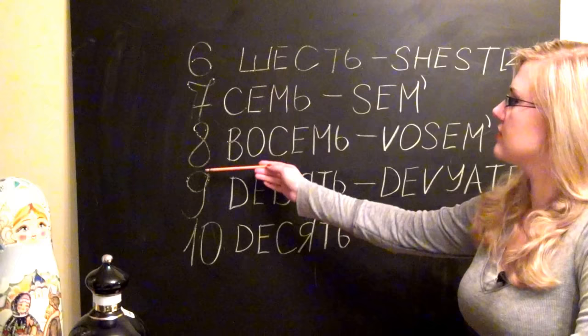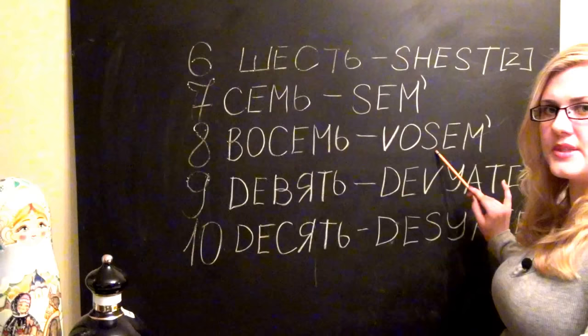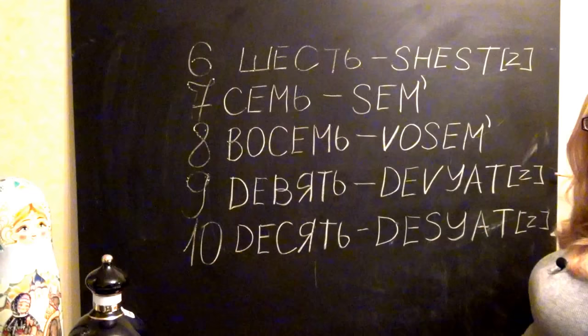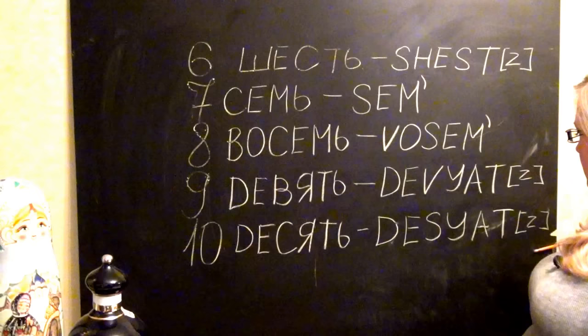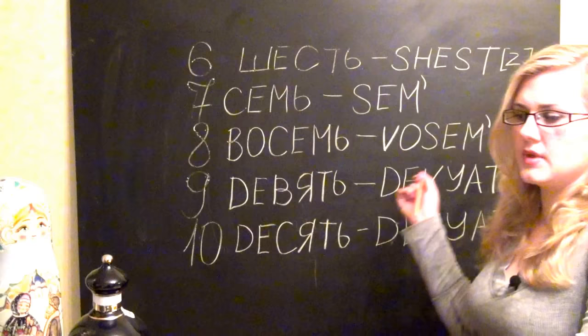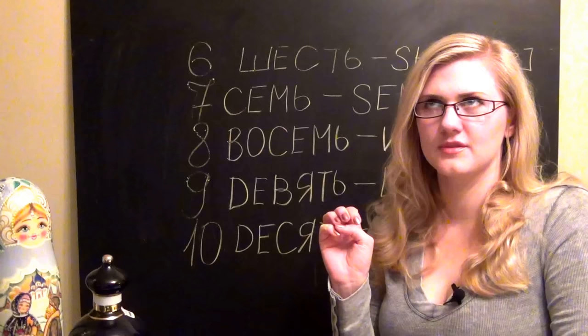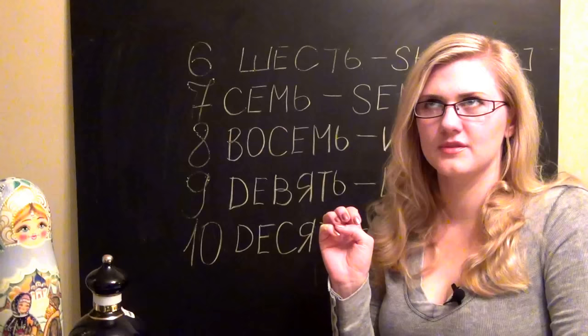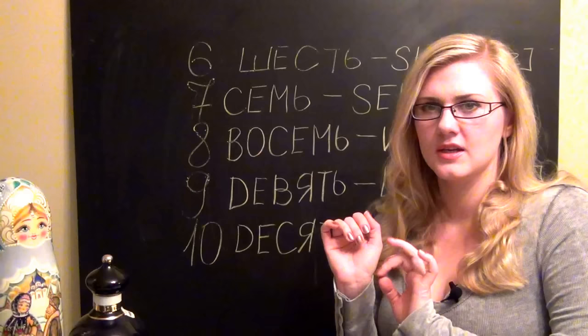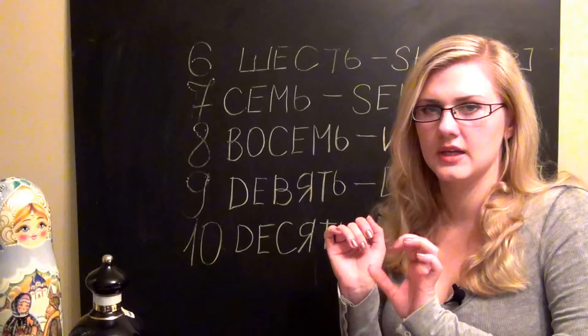Восemь. Девять. And now we can try to pronounce it all together from 1 to 10. Один, два, три, четыре, пять, шесть, семь, восemь, девять, десять.